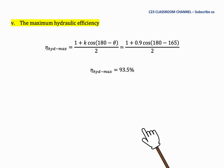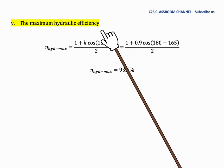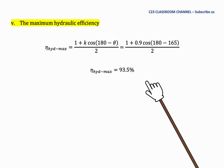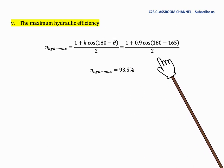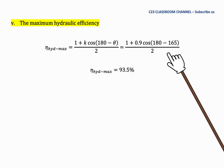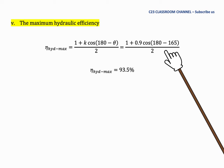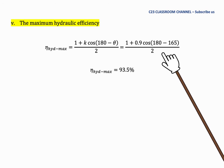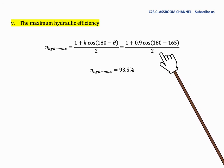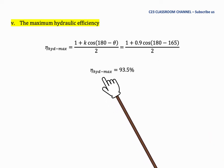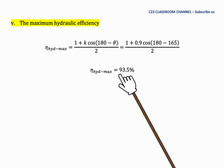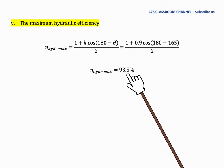Finally, we calculate the maximum hydraulic efficiency. Using the maximum hydraulic efficiency equation discussed in a previous lesson, we substitute the relevant values and obtain a maximum hydraulic efficiency of 93.5%.